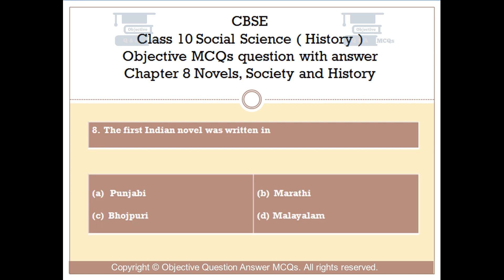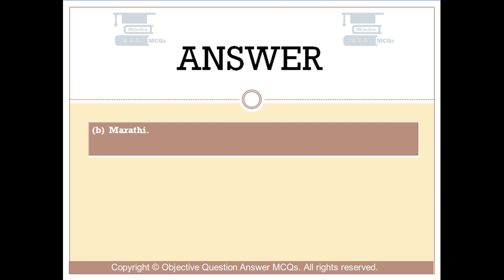Question number 8. The first Indian novel was written in: Option A: Punjabi. Option B: Marathi. Option C: Gujarati. Option D: Malayalam. The right answer is Option B — Marathi.